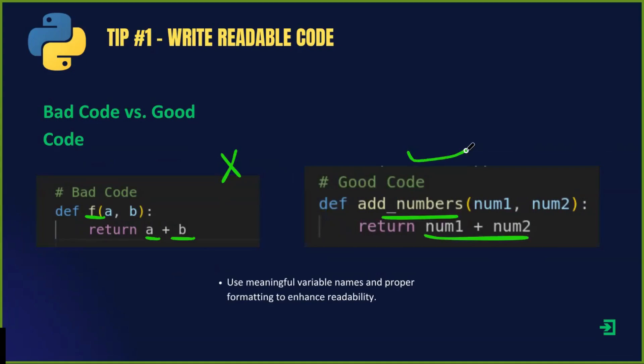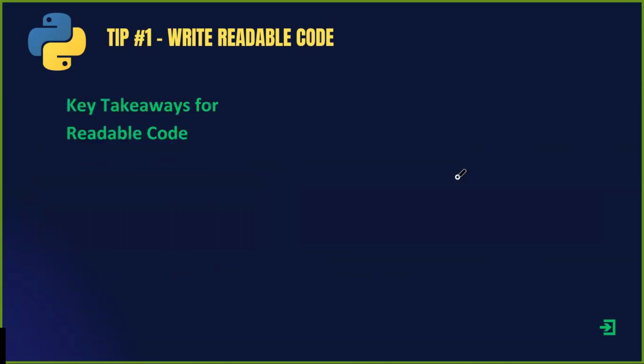Here are the key takeaways for readable code. To write clean and readable Python code, always use clear and descriptive variable names, maintain proper indentation, and write useful comments when needed. These small changes make a big difference in making your code understandable and maintainable.